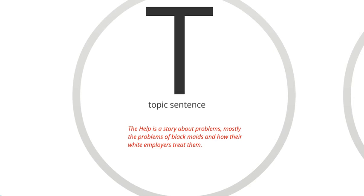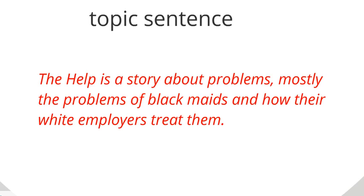Let's start with the topic sentence. The first thing I want to say about the topic sentence is that it is talking about ideas. It is not an example from this film. Lots of people fall into this trap — they talk about something that happened in the film as the topic sentence. You need to stay with your topic sentence at the level of ideas, talking about things which are true in a number of examples.